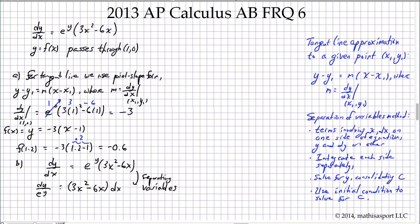It doesn't matter which side we put the x on and which side we put the y on, so long as we're consistent. Integrating both sides is our next step. So what we're finding is ∫e^(-y)dy—I've simply moved the e^y up into the numerator—and we're saying that equals ∫(3x² - 6x)dx.